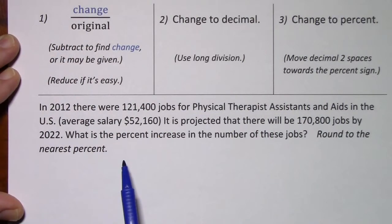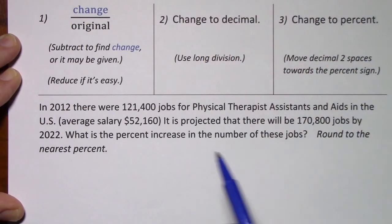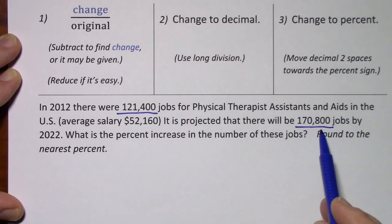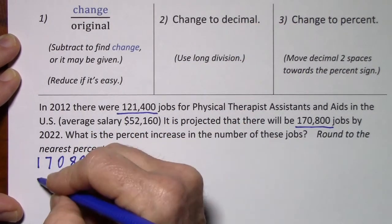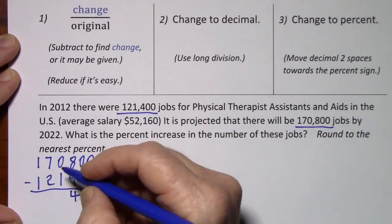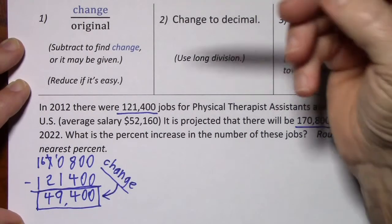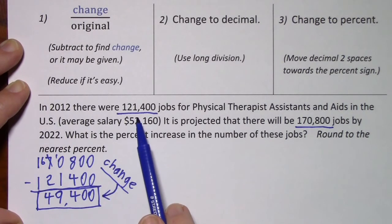I'll give you a moment to read this question. The change from the original to the new is going to be 121,400 to 170,800. We'll subtract to find this change, so the change is 49,400. We'll put our change of 49,400 over the original, which is 121,400.